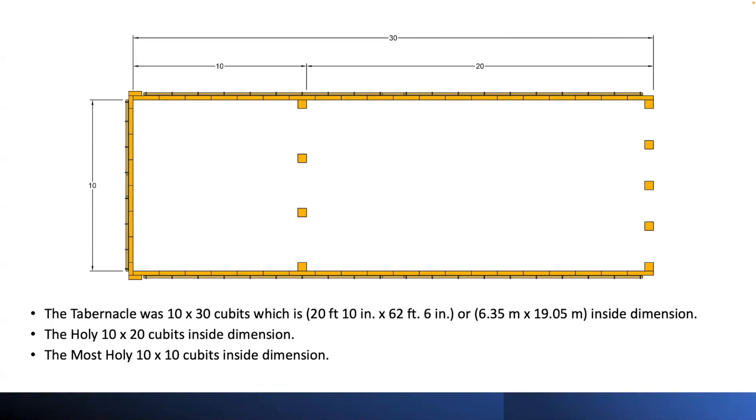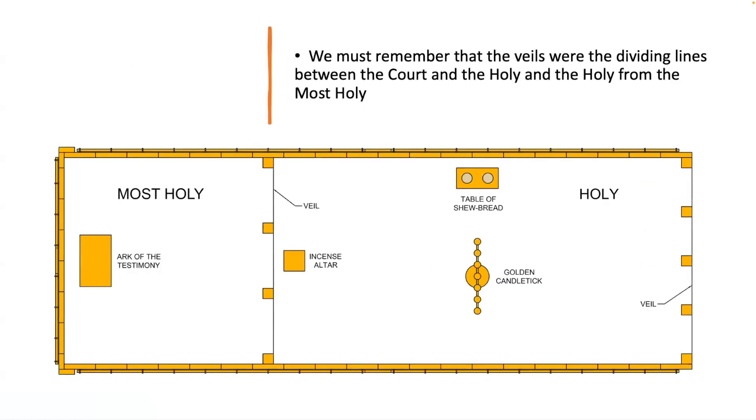The Holy was 10 by 20 cubits inside dimension. The Most Holy was 10 by 10 cubits inside dimension. We must remember that the veils were the dividing lines between the court and the Holy, and the Holy from the Most Holy.